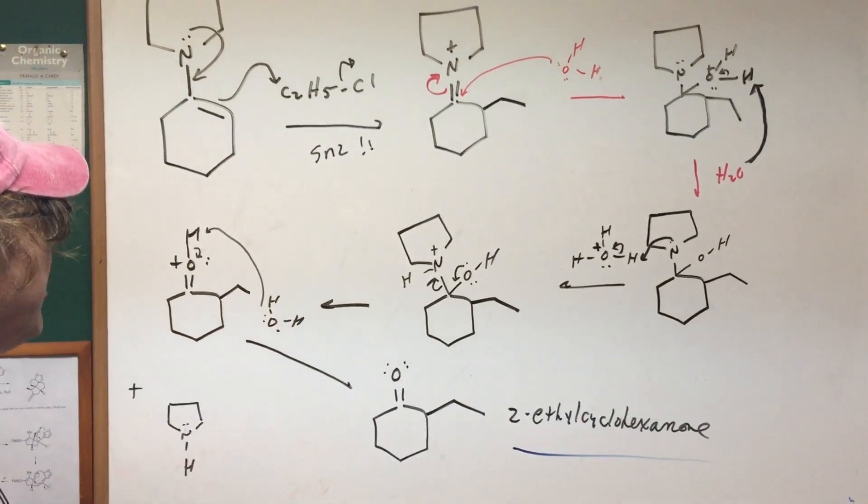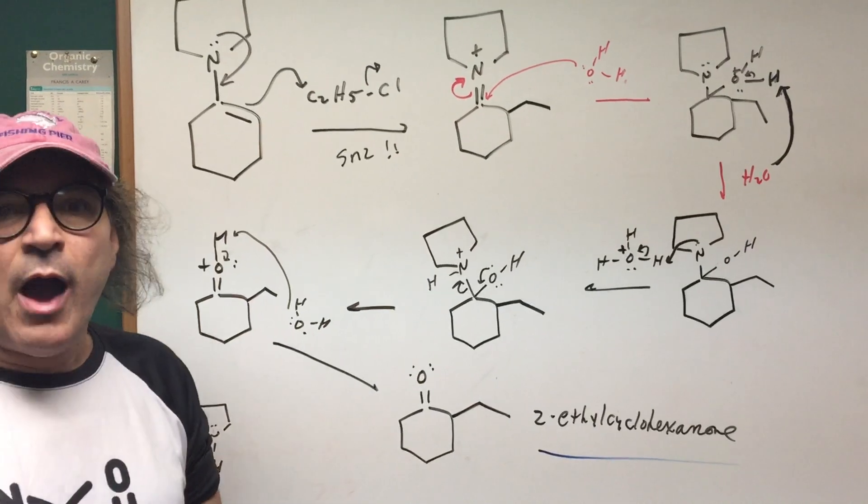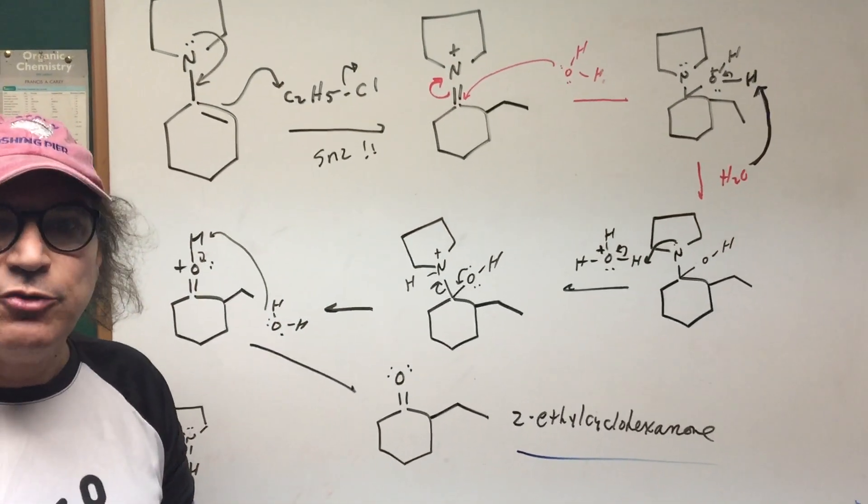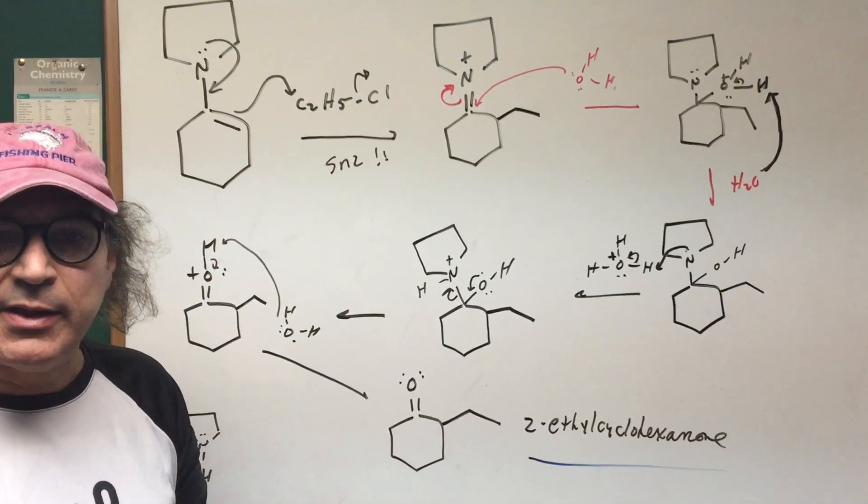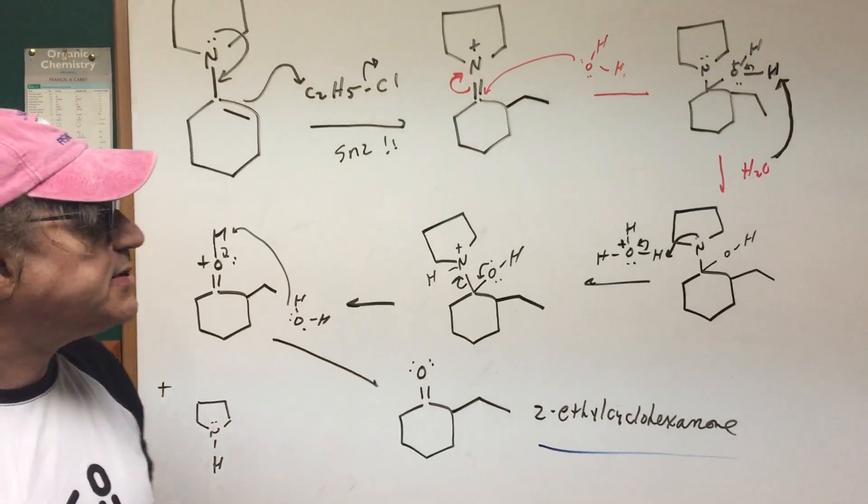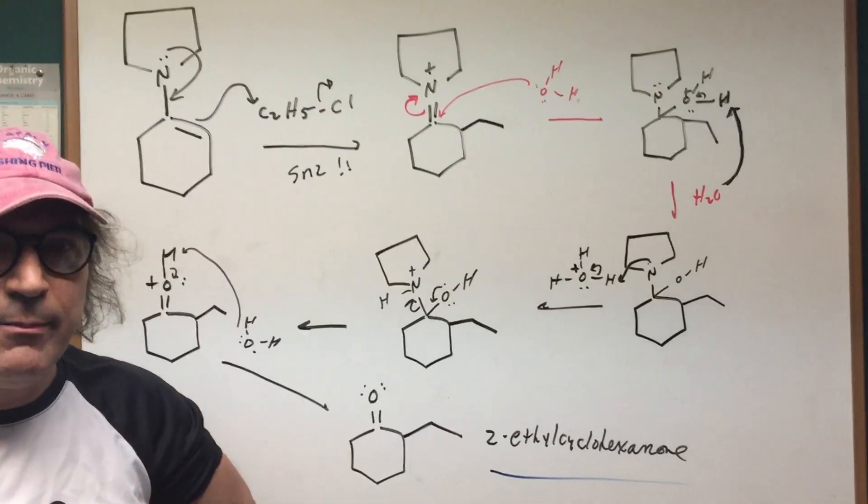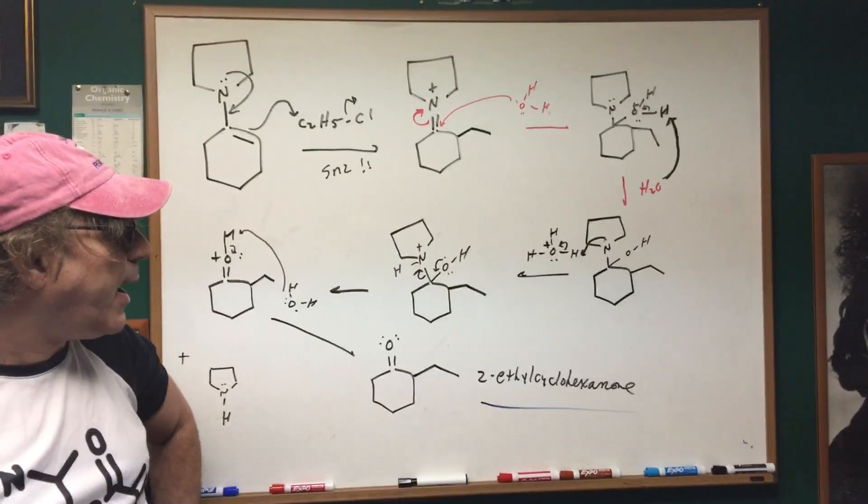There's many other reactions that are similar to this. A very similar reaction is what's called a Stork enamine synthesis. The Stork reaction is done in an analogous way, but if you can understand this you're in good shape to understand the chemistry of the enamines. I hope this helps and clears up something that even the best of students are a little confused on.